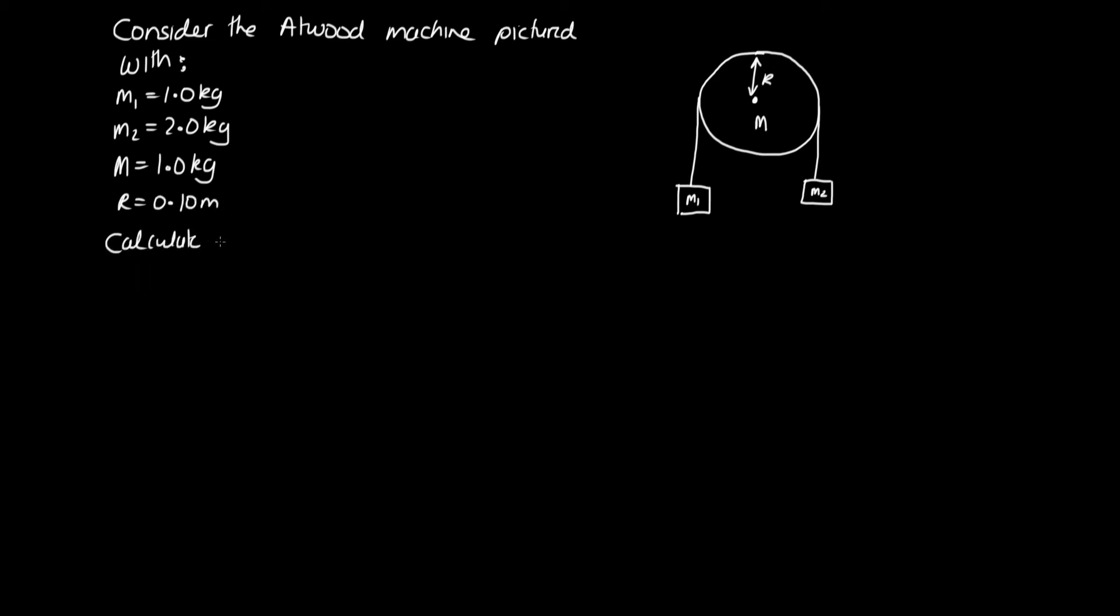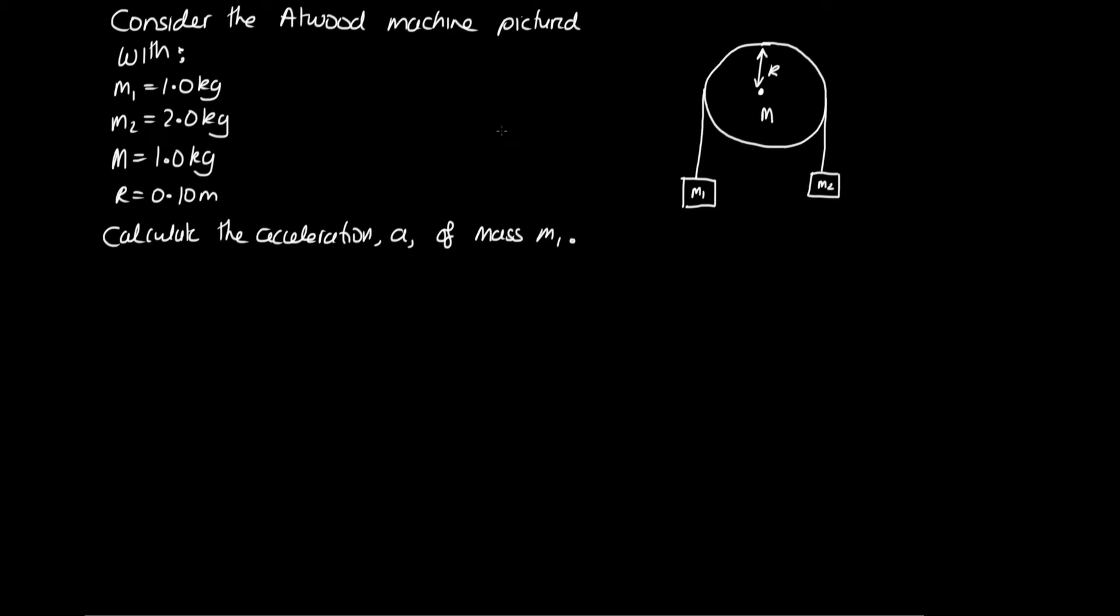So let's see the type of problem that we can solve with this now by having a look at a worked example. The question is: consider the Atwood machine pictured with m₁ = 1.0 kg, m₂ = 2.0 kg, capital M = 1.0 kg, r = 0.10 m. Calculate the acceleration a of mass m₁. Okay, so this question is a little bit different to previous ones where we have ignored the mass of the disk. We now know enough about rotation to account for the moment of inertia of this disk in our calculations.